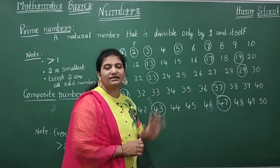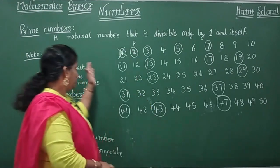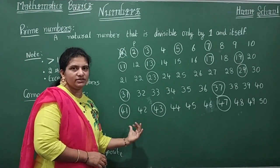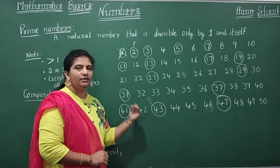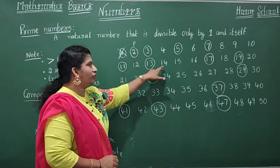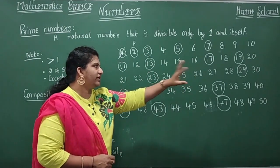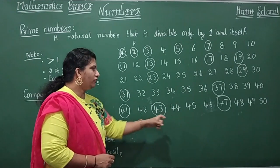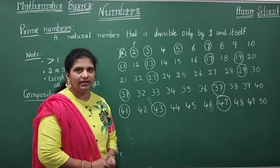What are composite numbers? Numbers divisible by other numbers, or having more factors — all those numbers are composite. The numbers which are not prime are all composite. So the composite numbers from 1 to 50 are: 4, 6, 8, 9, 10, 12, 14, 15, 16, 18, 20, 21, 22, 24, 25, 26, 27, 28, 30, 32, 33, 34, 35, 36, 38, 39, 40, 42, 44, 45, 46, 48, 49, 50. All these numbers are called composite numbers.